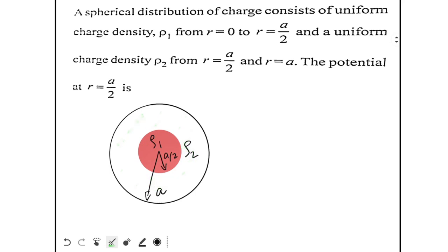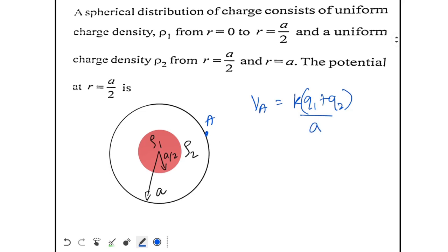Now, how to find the potential? Let's first take the point on the outer surface at radius a. The potential at a will be k(Q1 + Q2) / a, where Q1 is the charge of the inner sphere and Q2 is the charge of the outer shell.